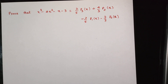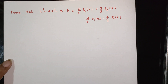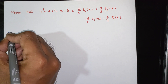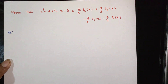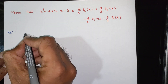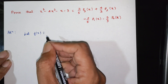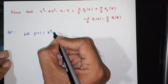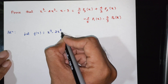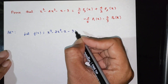In the next question, prove that x cube minus 2x square minus x minus 3 is equal to 2 by 5 P3 of x plus 4 by 3 P2 of x minus 2 by 5 P1 of x minus 7 by 3 P0 of x. Solution: let f of x be equal to x cube minus 2x square minus x minus 3.